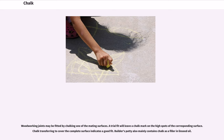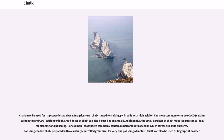Woodworking joints may be fitted by chalking one of the mating surfaces. A trial fit will leave a chalk mark on the high spots of the corresponding surface; chalk transferring to cover the complete surface indicates a good fit. Builder's putty also mainly contains chalk as a filler in linseed oil.